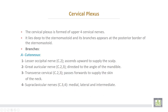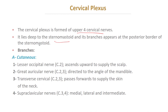The cervical plexus is formed by the upper four cervical nerves. It lies deep to the sternomastoid muscle, and its branches appear at the posterior border of the sternomastoid. Cutaneous branches include: first, the lesser occipital nerve, root value second cervical, which ascends to supply the scalp behind the auricle. Second, the great auricular nerve, cervical two and three, directed to the angle of the mandible.